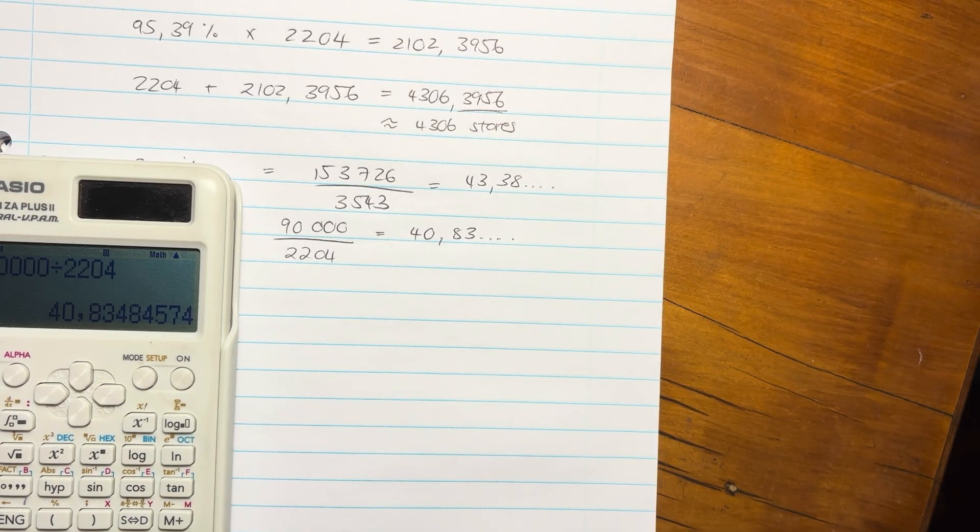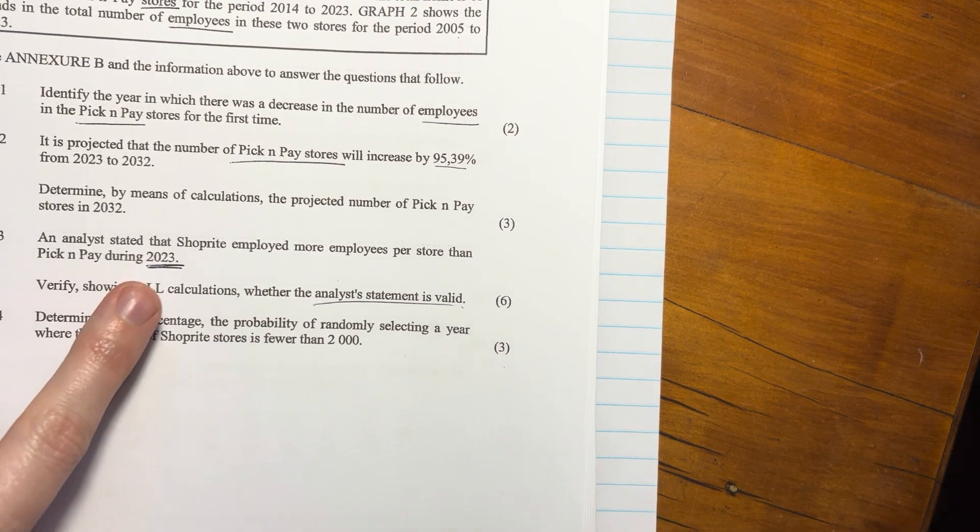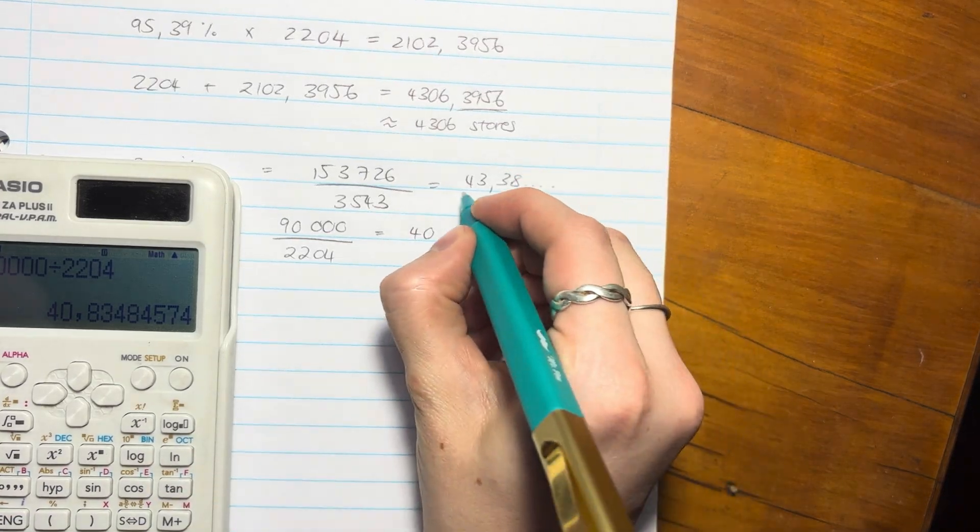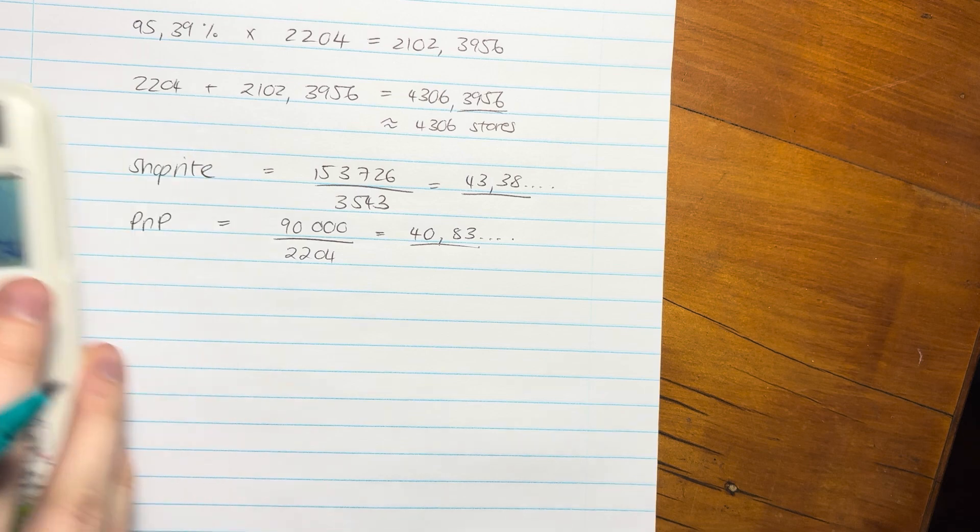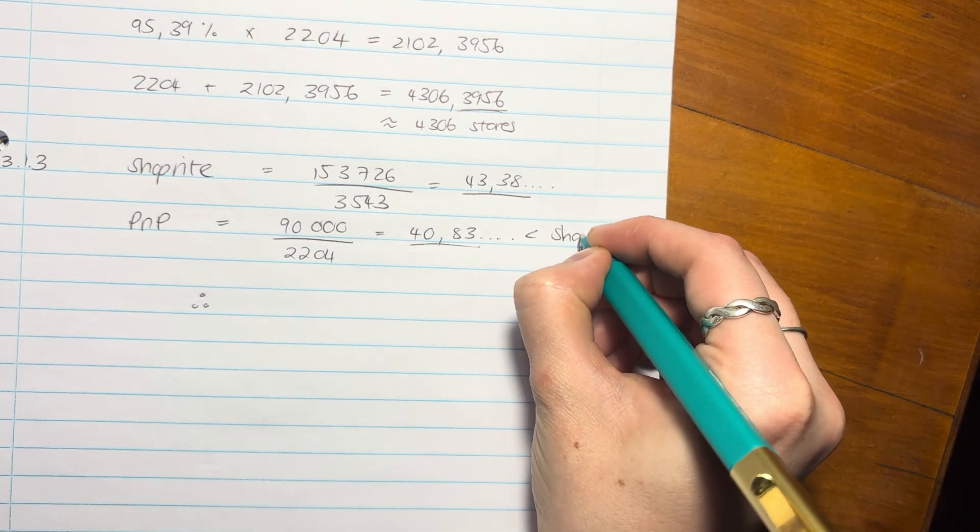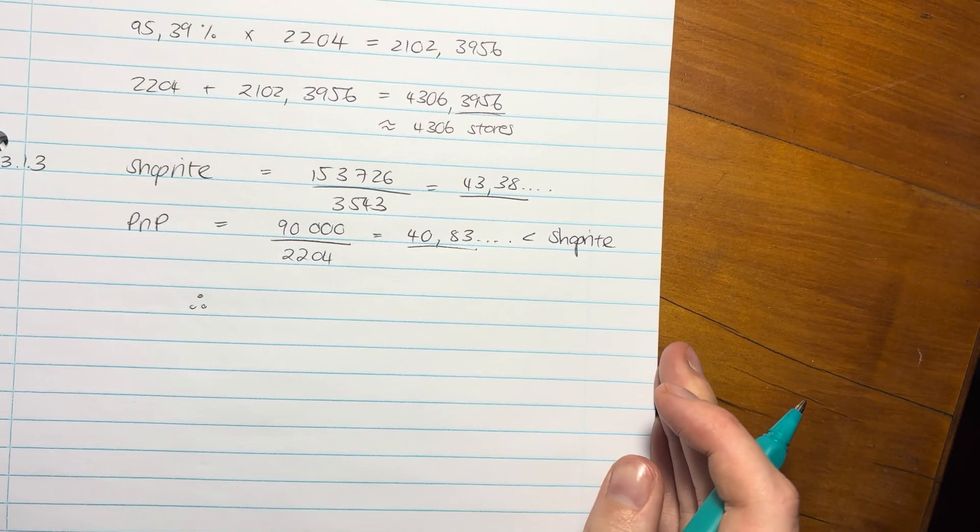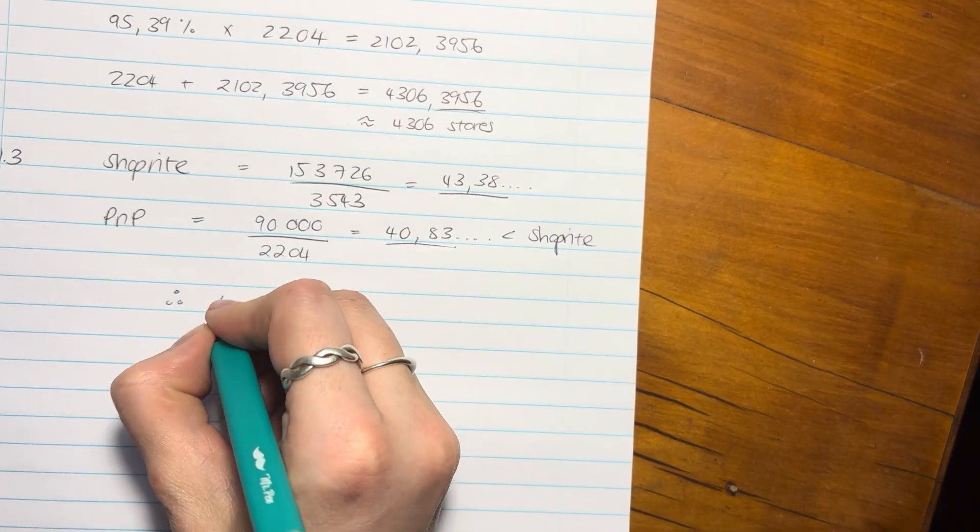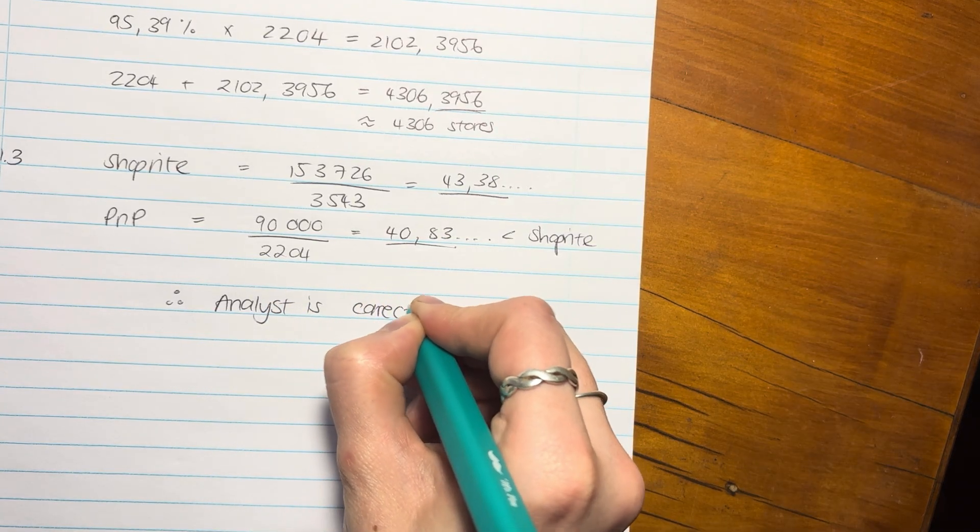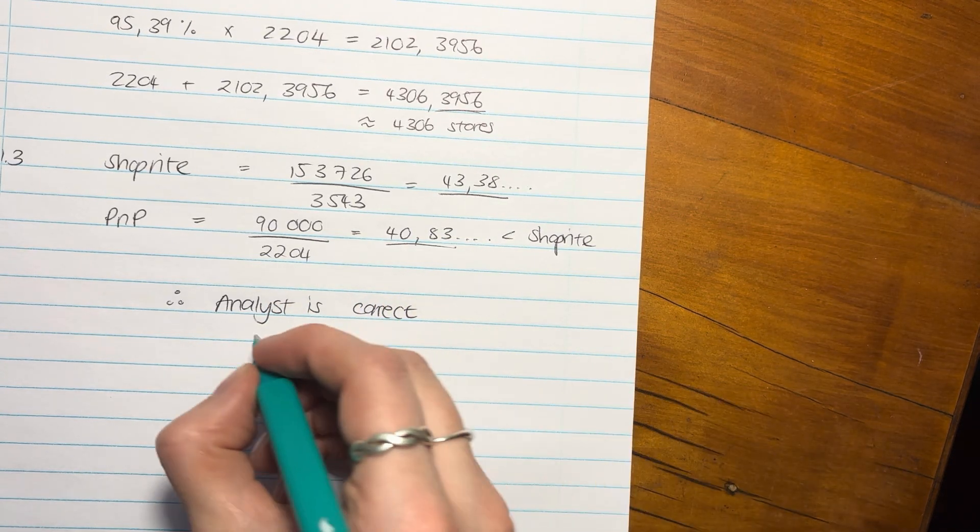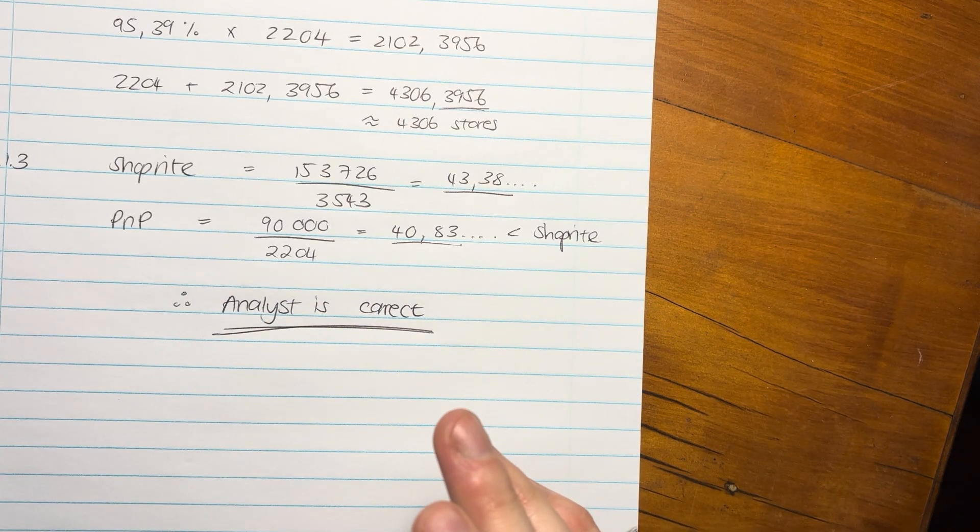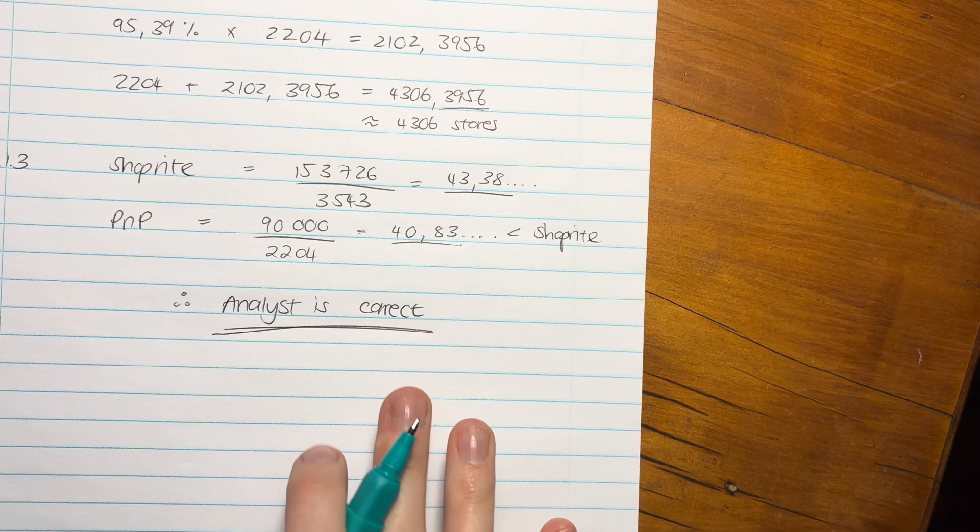What was the actual claim that we are disputing or proving? It said an analyst said that ShopRite employed more employees. Well, that's how many are ShopRite. That's how many are Pick n Pay. So you say, therefore, you can say that that is less than ShopRite. So you say, I basically agree. Therefore, analyst is correct or what they said is valid. But you have to give this. You can't just do the calculations and be like, I'm done. You have to give an answer.